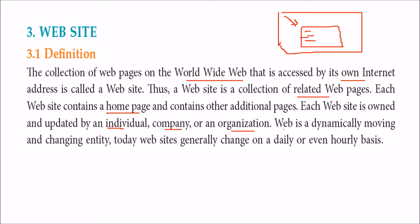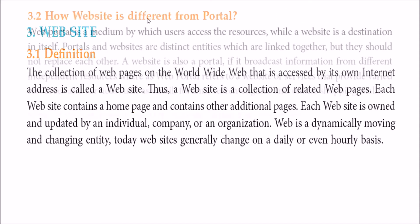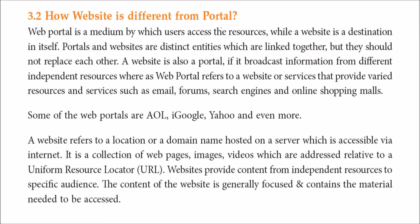Since earlier times when there were only static pages, things have changed. Now we have websites which are very dynamic. How is a website different from a portal? A portal is a bigger form of a website. For example, if you go to www.yahoo.com, you will see a home page where you have news, weather, a search engine, and various things. You click a link and are directed to it. A web portal is a medium by which users access resources, while a website is a destination by itself.